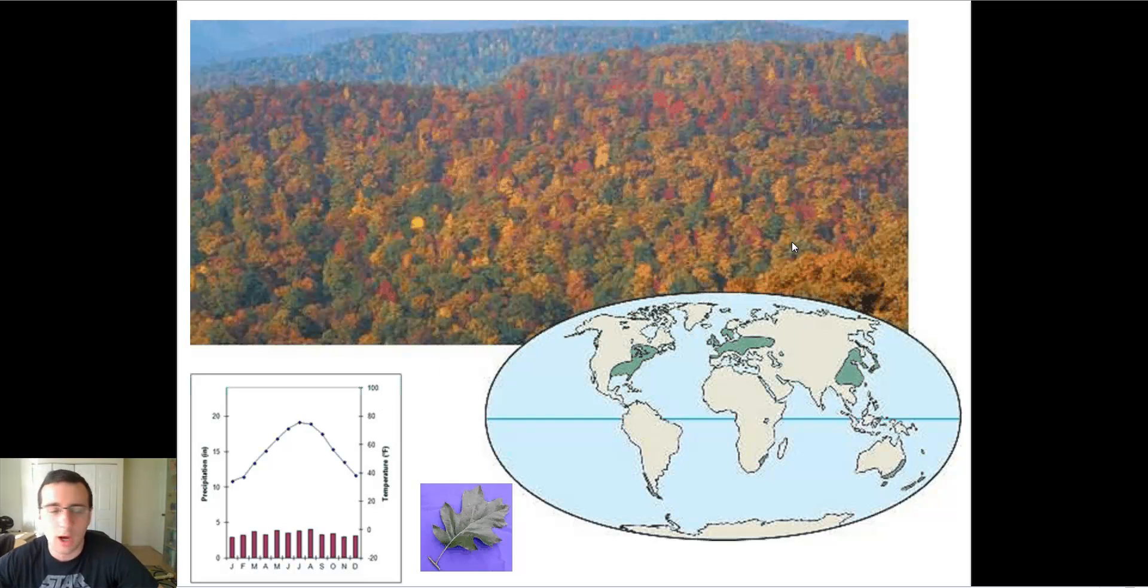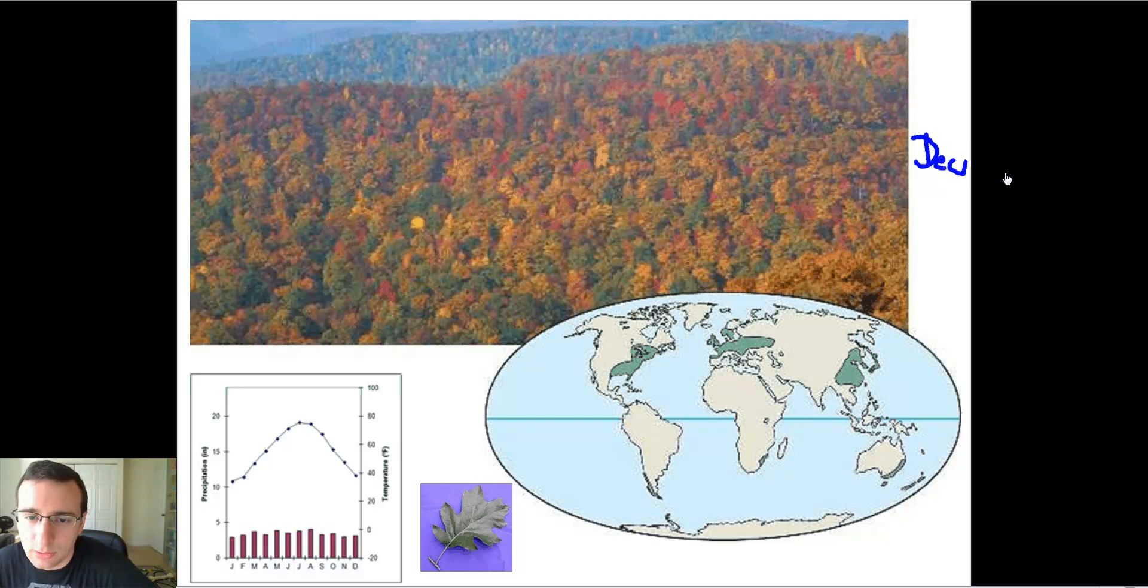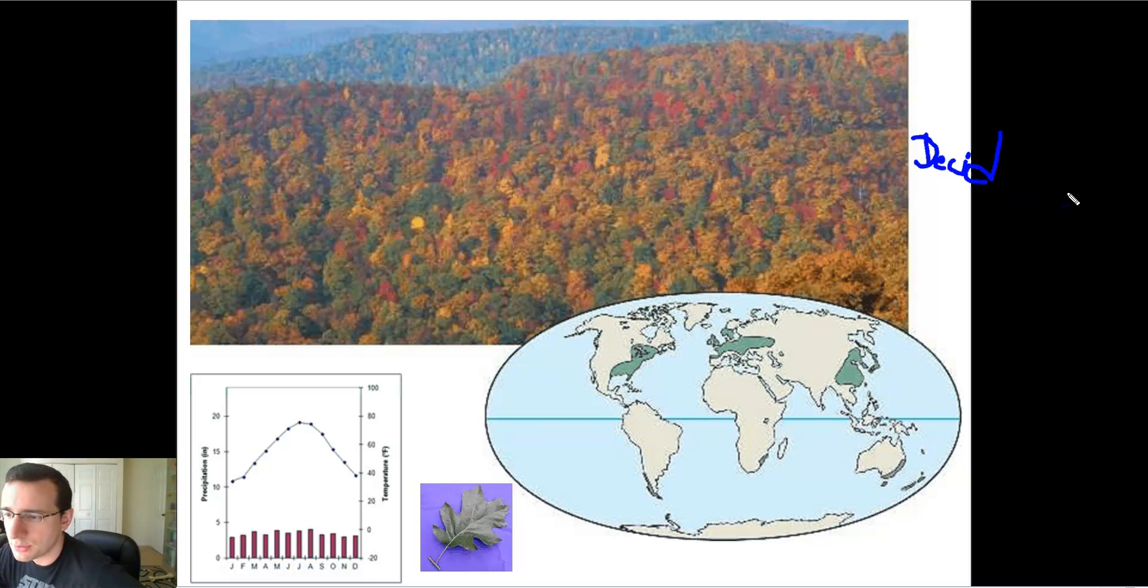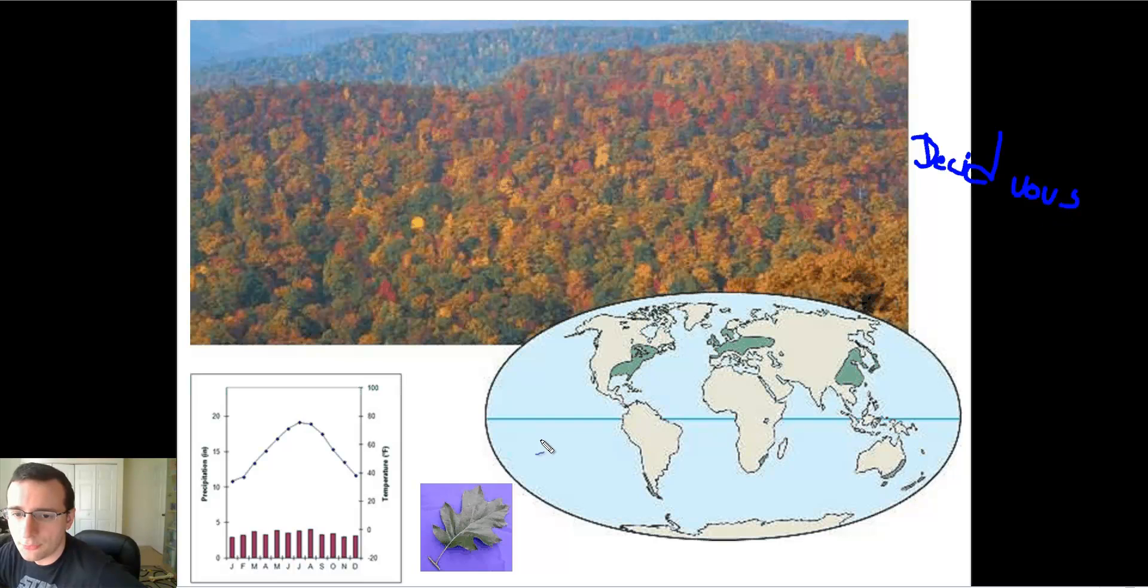This one is super cool, it's called a temperate broadleaf forest or also called deciduous forest. Before I continue, let me talk about that word deciduous. Deciduous is a word that basically means trees that lose their leaves during certain months of the year. So deciduous forests are going to be those forests that go through fall, literally the fall.